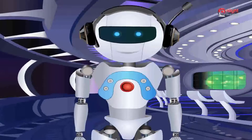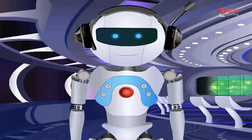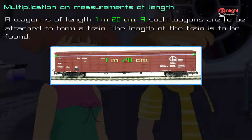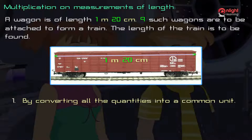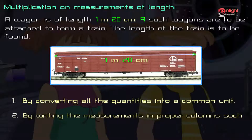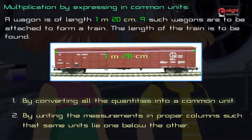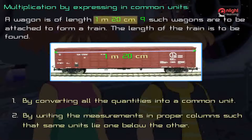Multiplication on measurement of lengths is done in a similar way as addition and subtraction. It can be solved by two methods. One method is by converting all the quantities into a common unit. The other method is by writing the measurements in proper columns such that the same units lie one below the other.